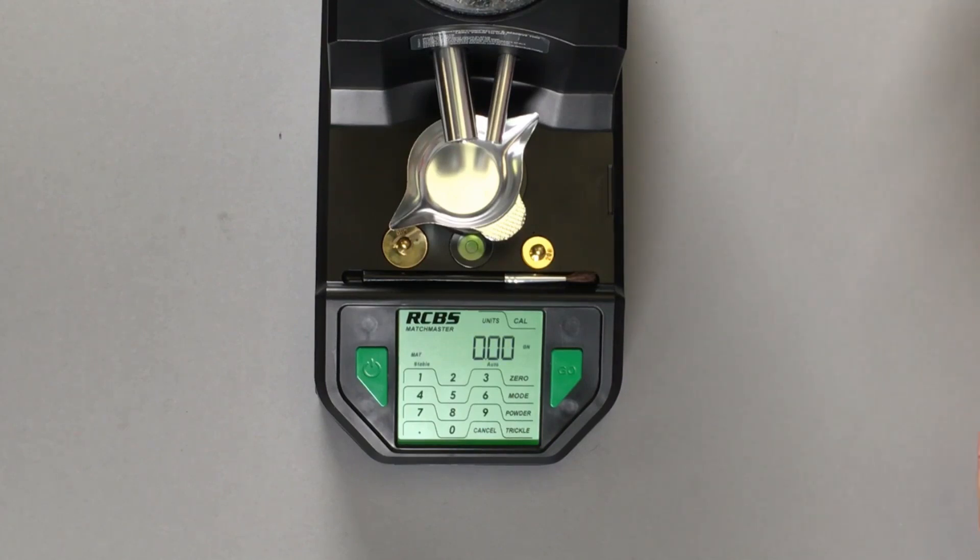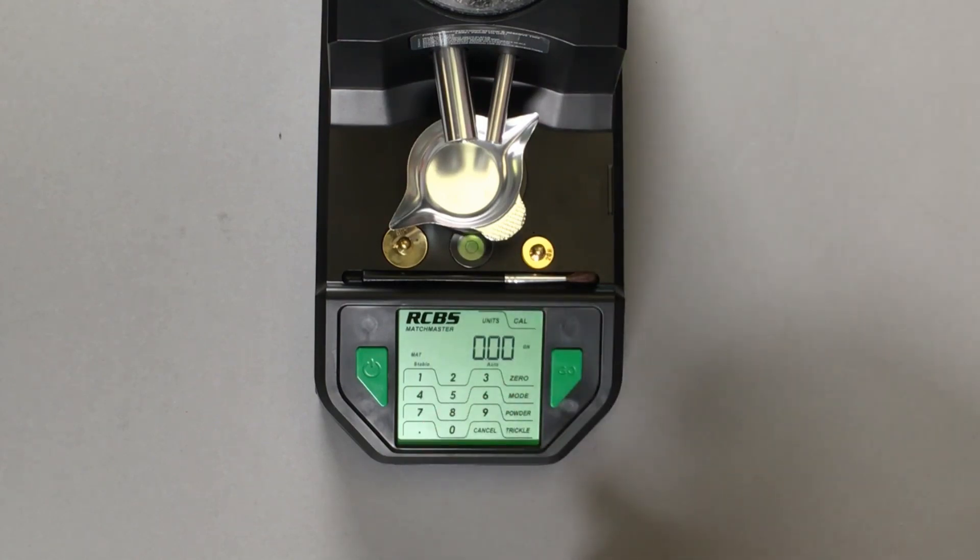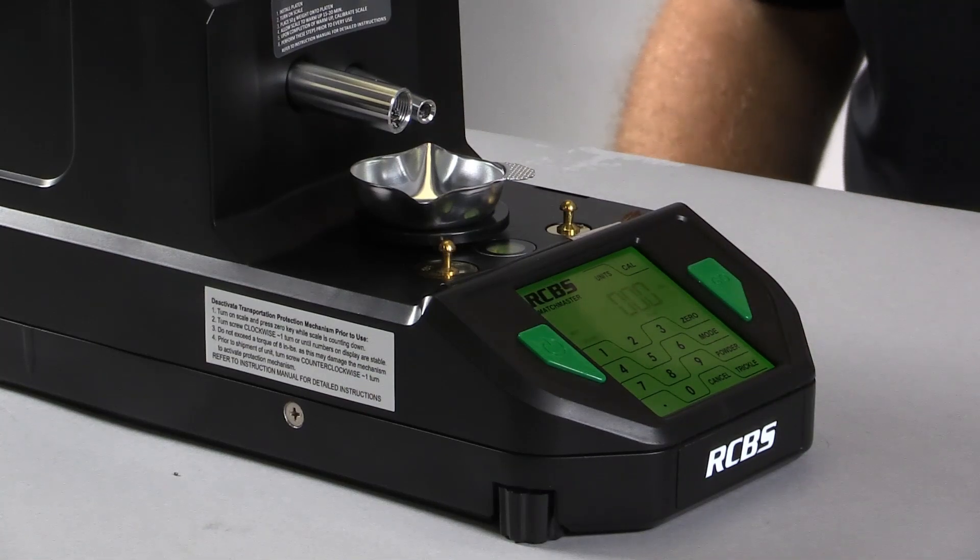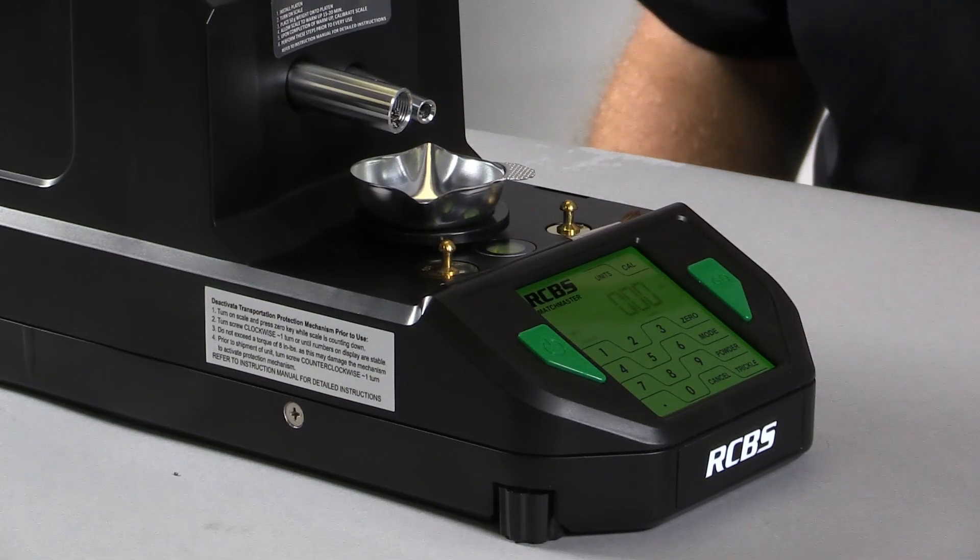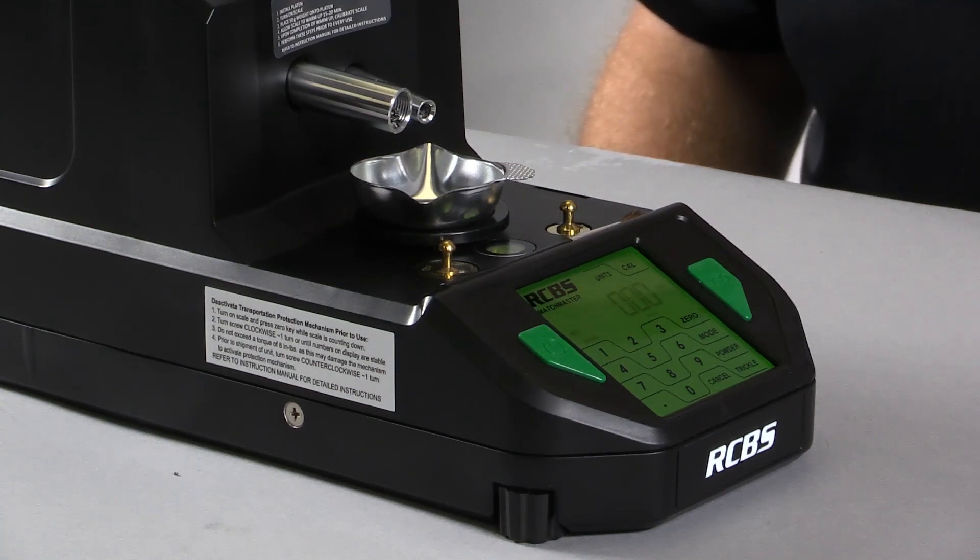To select a powder speed, simply press your one through four and push powder. So one powder, that will be a dispense speed one. You've got four pre-programmed powder speeds to cover the most popular types of powder: powder dispense speed one, powder dispense speed two, powder dispense speed three, and powder dispense speed four.